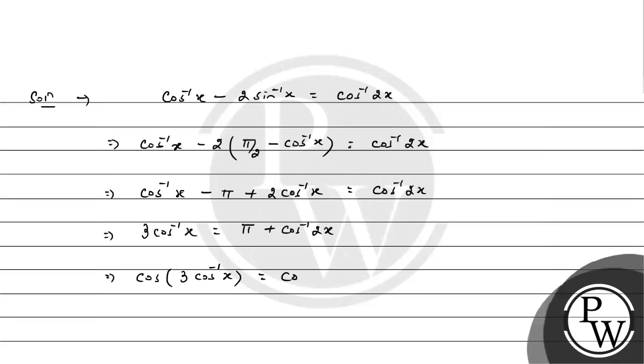This becomes 3cos⁻¹(x) = π + cos⁻¹(2x), which gives cos⁻¹(4x³ - 3x) = π + cos⁻¹(2x). Using cos(π + θ) = -cos(θ).